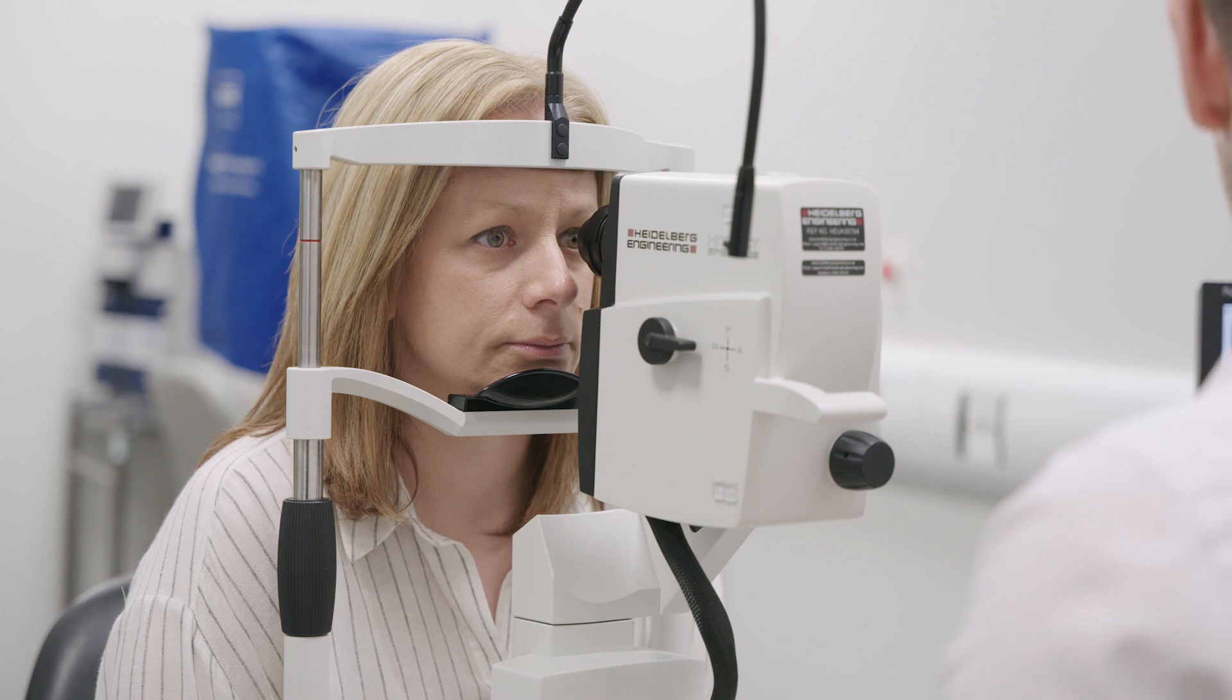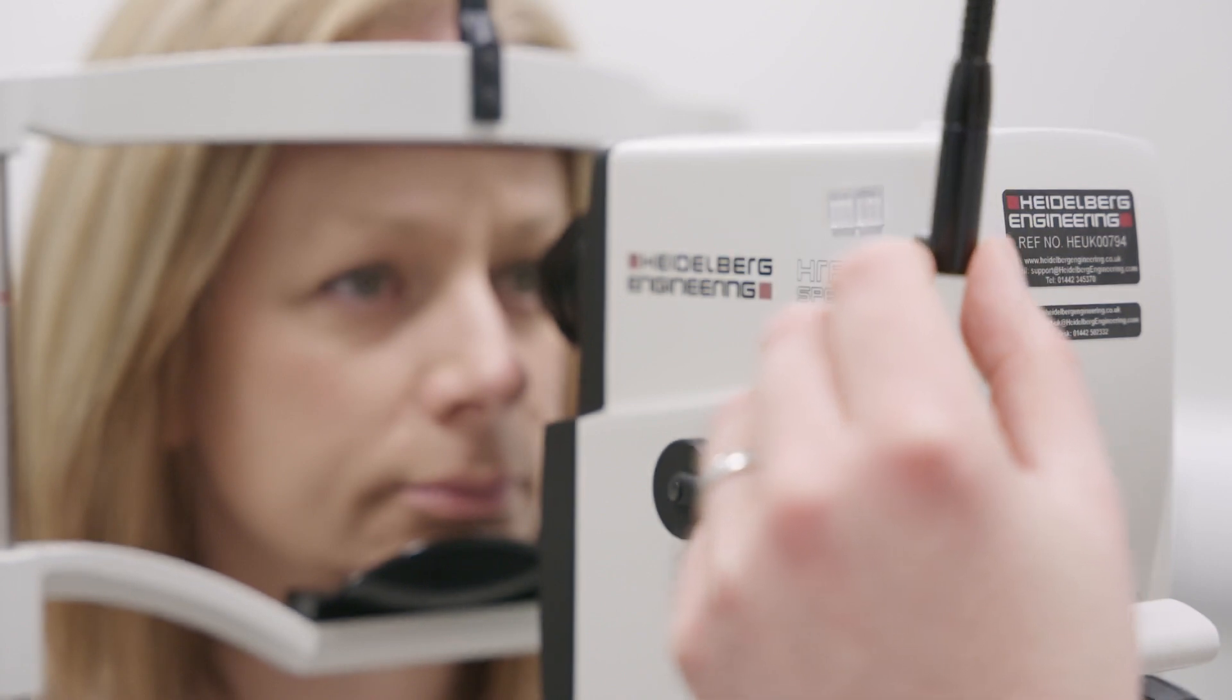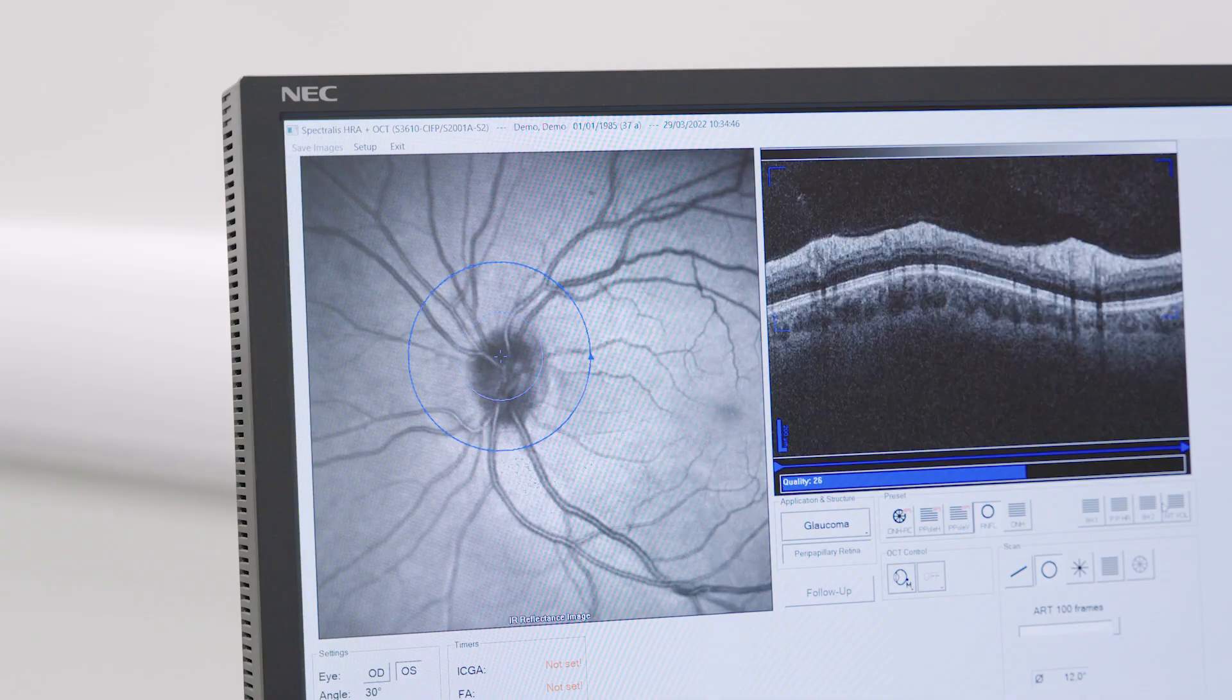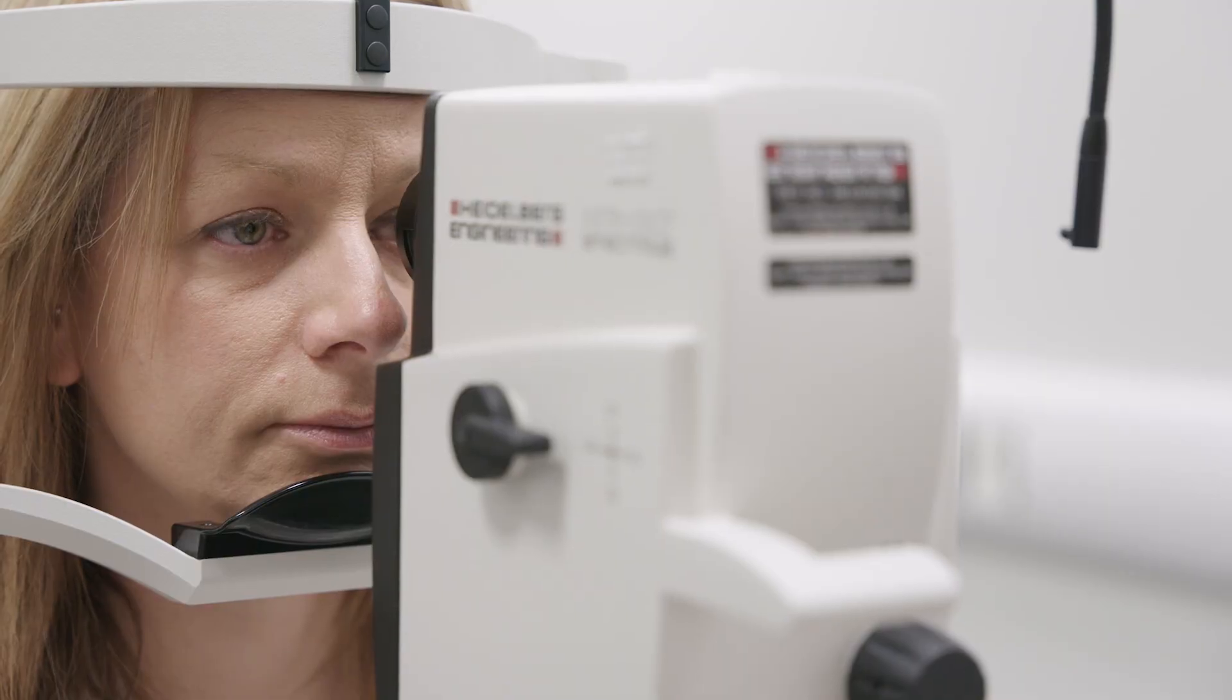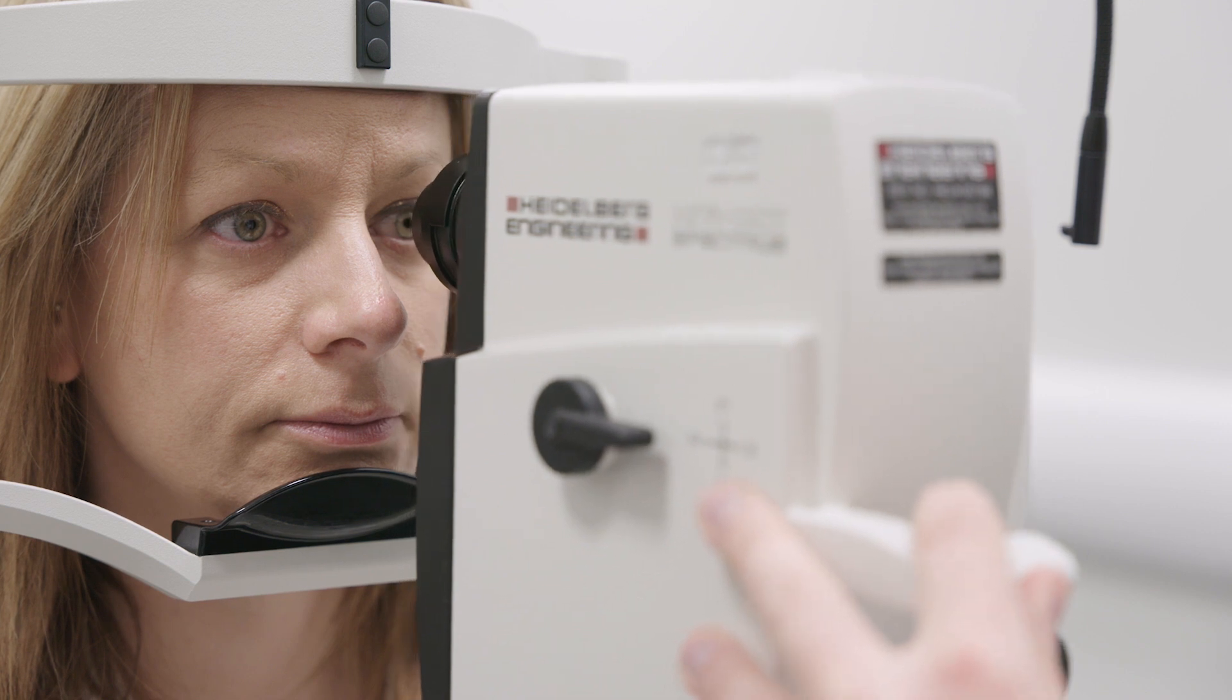If the patient is unable to fix with the eye being imaged, the external fixation target should be shown to the neighbouring eye and adjusted until the desired structure is clearly visible in the capture window. If the patient is unable to fix with either eye, encourage the patient to look straight ahead as best they are able.